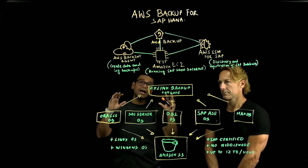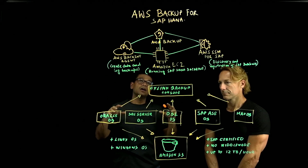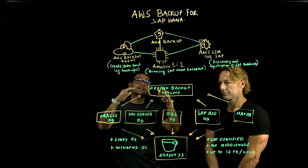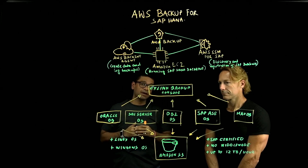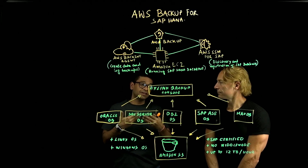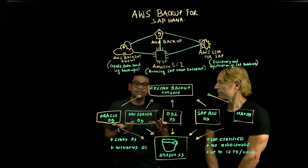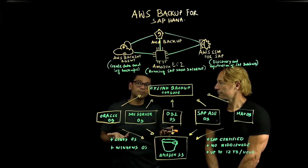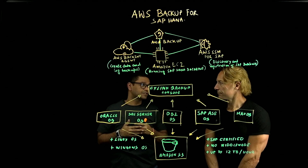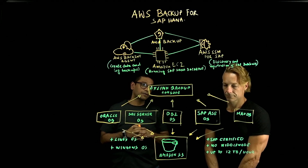On top is AWS Backup, which is a centralized solution for data protection across all AWS resources. Once the backup is created, it is controlled centrally using AWS Backup. With the AWS Backup tool, you can set up policies, tag the backups, and create lifecycle management policies on those backup files.